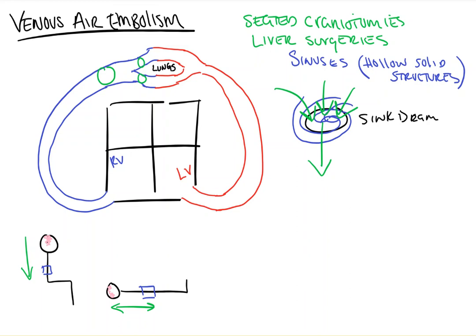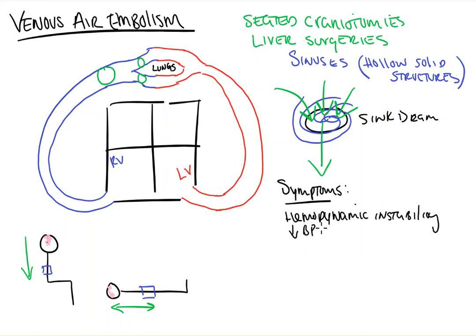We're going to talk mostly about the seated craniotomy. Things you're going to see to recognize it — your symptoms. If the embolism is large enough, it's going to be something along the lines of hemodynamic instability, which would be a drop in blood pressure and tachycardia. We'll see a decrease in our end-tidal CO2 as a result of poor V/Q matching, because your Q does not match your V — you've blocked off some amount of blood flow to a given portion of the lung, so your end-tidal CO2 is decreased. Finally, patients may become cyanotic or discolored.